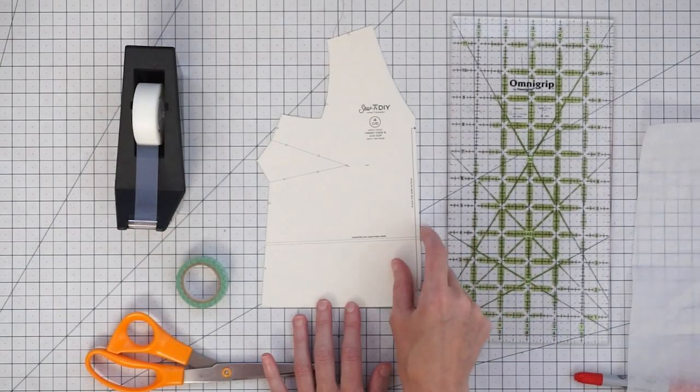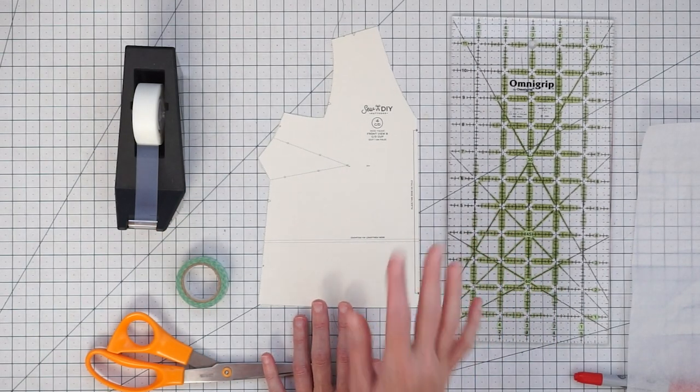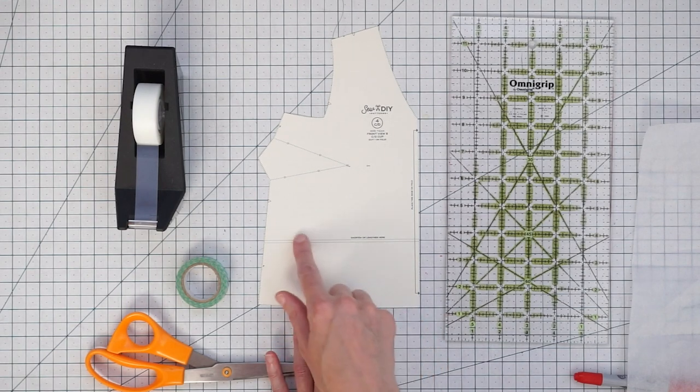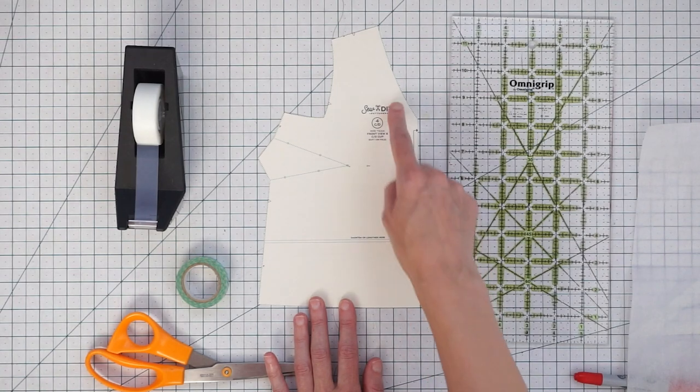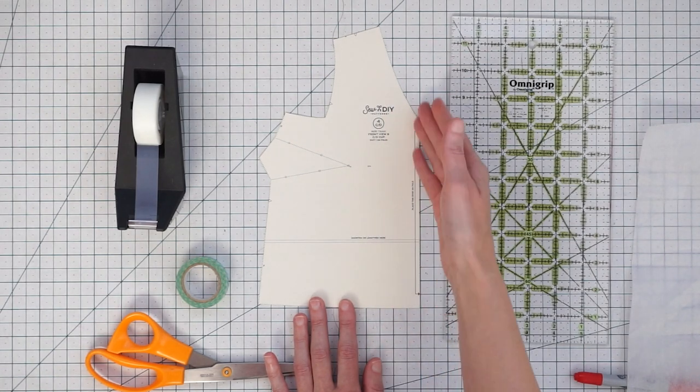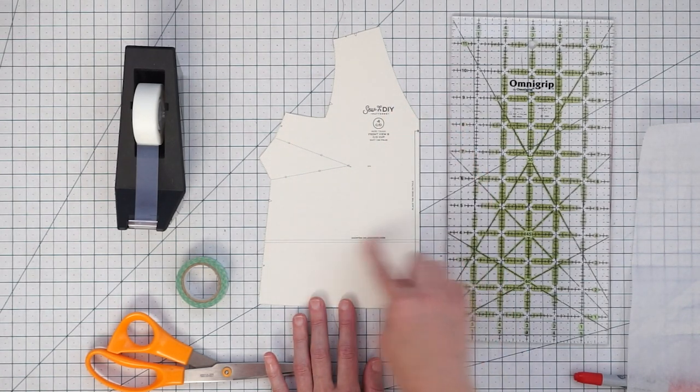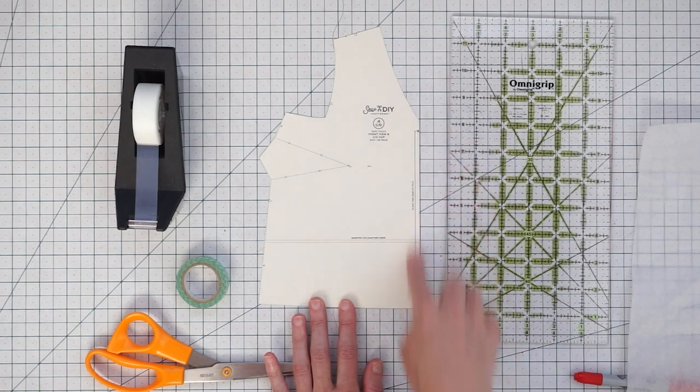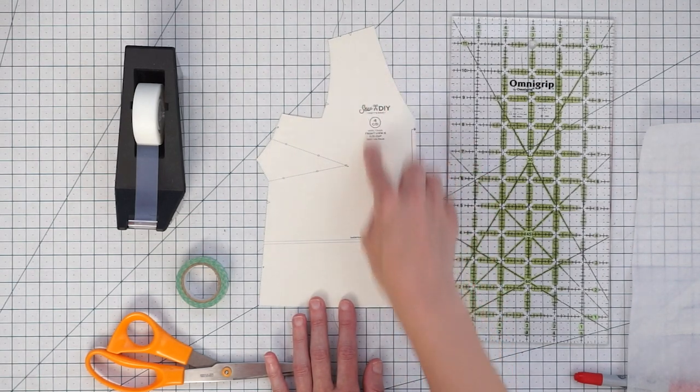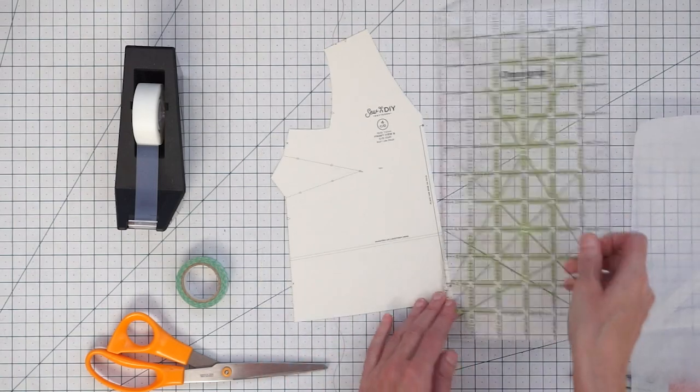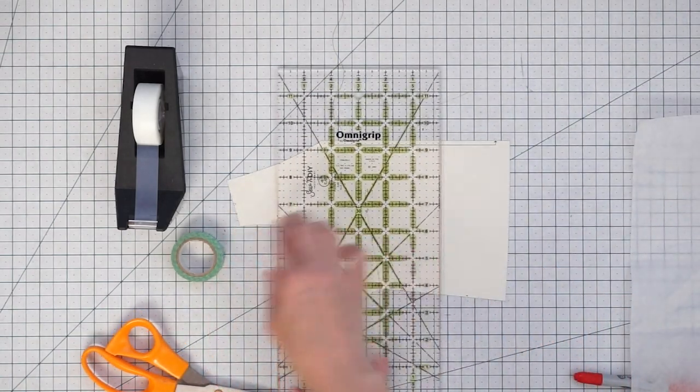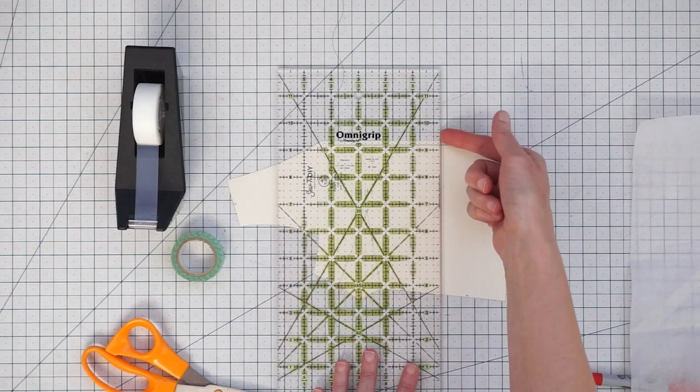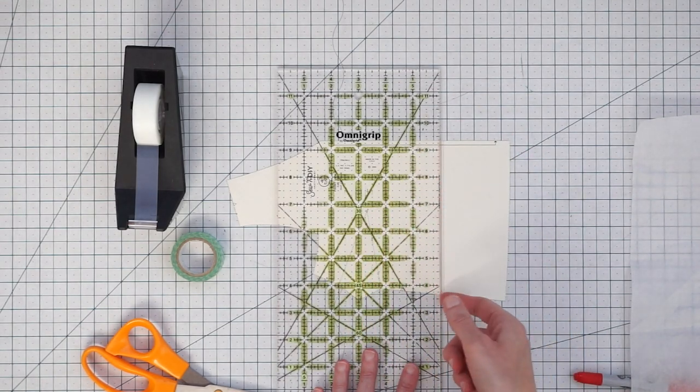But if you don't have a lengthen and shorten line you can add one and you just want to make sure that that line is perpendicular to either the fold line or the grain line. This pattern is cut on the fold so here this lengthen and shorten line is perpendicular to that, but if you had a grain line going down here you would just put your ruler on top and then make sure it's all lined up and perpendicular and draw that line at a 90 degree angle.